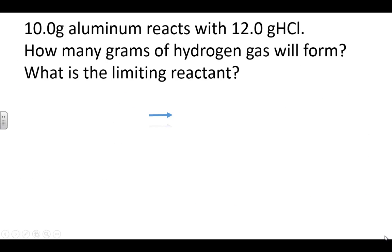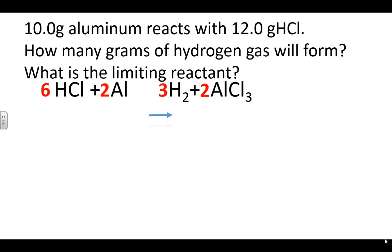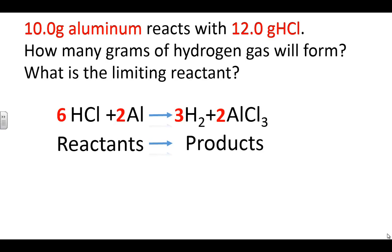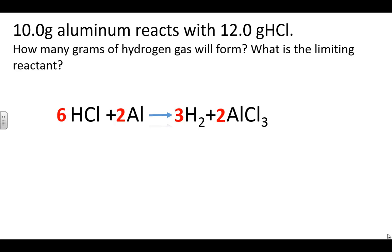We're going to work with 10 grams of aluminum and 12 grams of hydrochloric acid. The question is: how many grams of hydrogen gas will form, and what is the limiting reactant? We'll start with our balanced chemical equation. This is a limiting reactant problem because it tells us both amounts — aluminum and hydrochloric acid are the two reactants. We're looking for which one limits the amount of product we can make, and since it asks about hydrogen gas, that's the product we'll focus on.